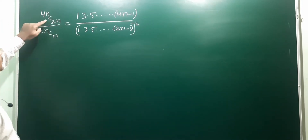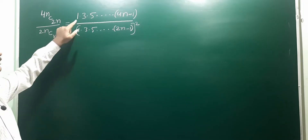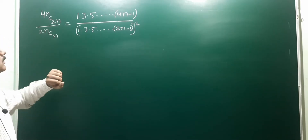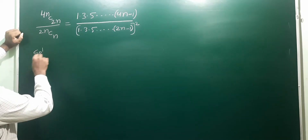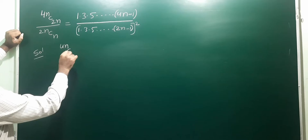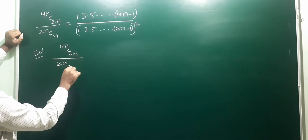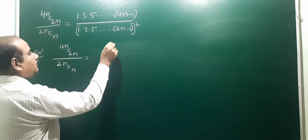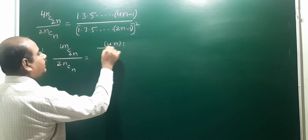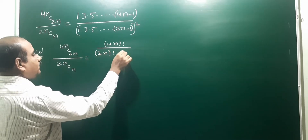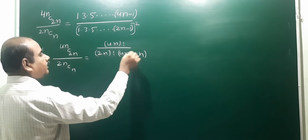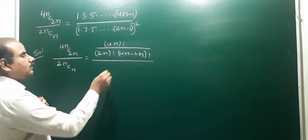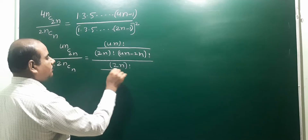The next problem: 4nC2n divided by 2nCn. The answer is (1·3·5···(4n-1)) divided by (1·3·5···(2n-1))². We start with the LHS. Applying the nCr formula: nCr = n! / (r! · (n-r)!). So 4nC2n = 4n! / (2n! · (4n-2n)!) which simplifies to 4n! / (2n! · 2n!).